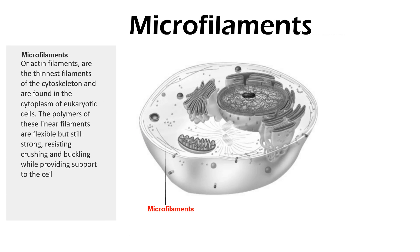Microfilaments, or actin filaments, are the thinnest filaments of the cytoskeleton and are found in the cytoplasm of eukaryotic cells. The polymers of these linear filaments are flexible but strong, resisting crushing and buckling while providing support to the cell.